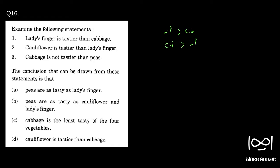Now, cabbage is not tastier than peas. 'Not tastier' can mean less than or equal to peas. Since if peas and cabbage are equally tasty, then 'cabbage is not tastier than peas' still holds true. So we should write cabbage is less than or equal to peas — that's what 'not tastier' means here.